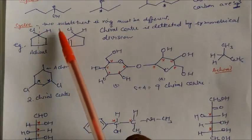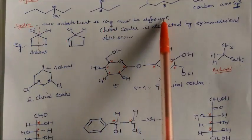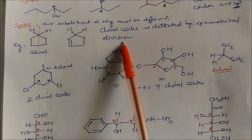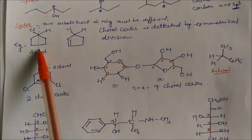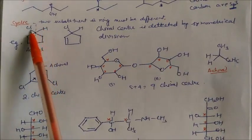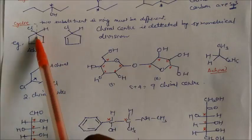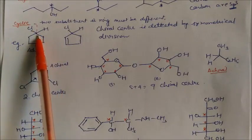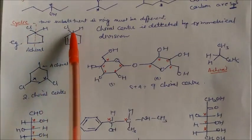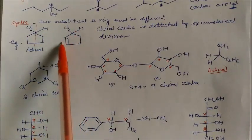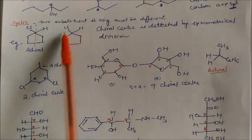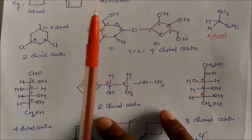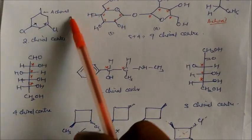In cyclic compounds, if the two substituents on the ring must be different, then the chiral center is detected by symmetrical division. For example, this compound is chiral because Cl and hydrogen are two different groups. If you do a symmetrical division, you can see this side has the same groups, so this carbon is called chiral. In this case, if you divide it, one side has a double bond and one has a single bond, so these two have different groups — this is your chiral center.